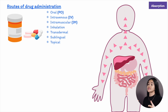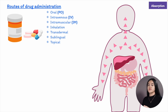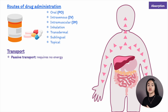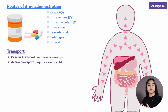Absorption varies greatly among different patient types. For example, food in the stomach, stomach acidity, and blood flow to the GI tract can all affect drug absorption. Before a drug reaches the circulation it needs to cross one or more cell membranes — this doesn't apply to intravenous administration. Movement across the cell membrane can occur via passive transport, which requires no energy, active transport, which requires ATP, or endocytosis.